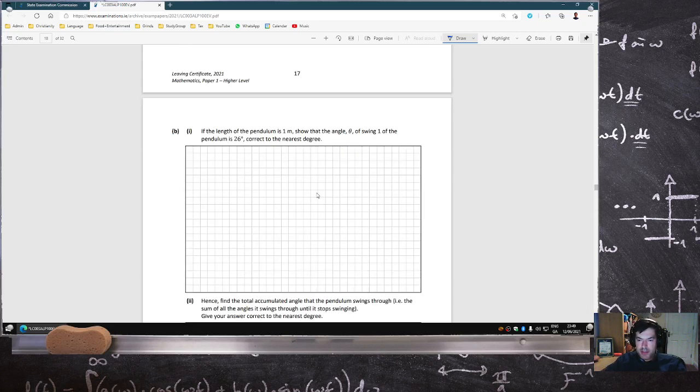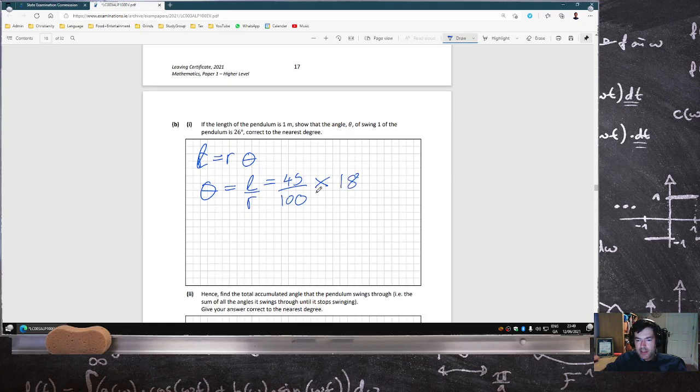Pendulum is 100 centimeters. Show the angle theta of swing 1 of the pendulum is 26 degrees, so L equals R theta. So theta is L over R, which would be 45 over 100, but we want that in degrees, so to convert into degrees we multiply by 180 over pi. And that is 26 degrees.